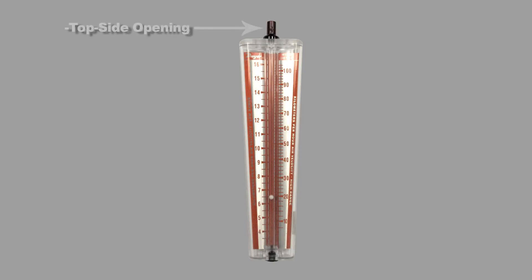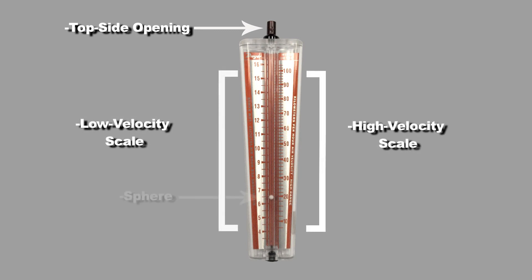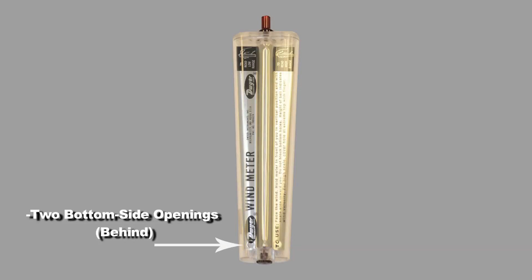Wind meter parts: top side opening, low velocity scale, high velocity scale, white sphere, and two bottom side openings located in the back of the wind meter.